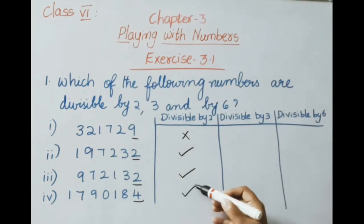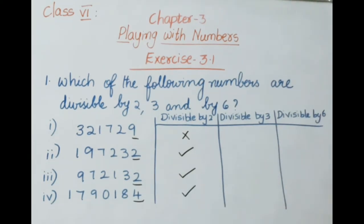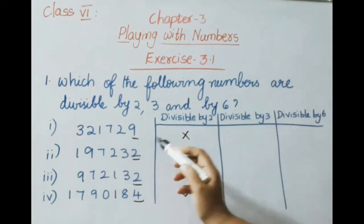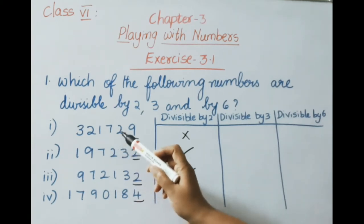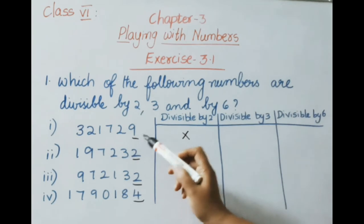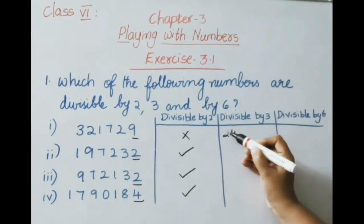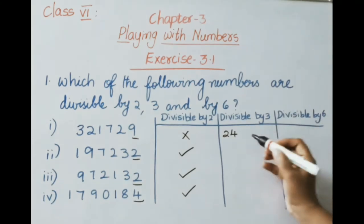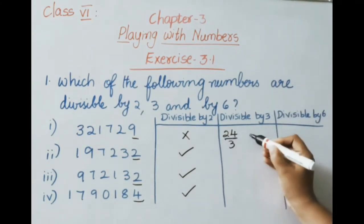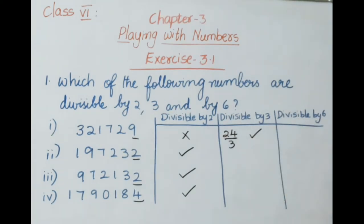Now for divisibility by 3: if the sum of the digits is a multiple of 3, then the given number is divisible by 3. For 3,21,729: 3+2+1+7+2+9 = 24. Since 24 is divisible by 3 (3×8=24), the given number is divisible by 3.